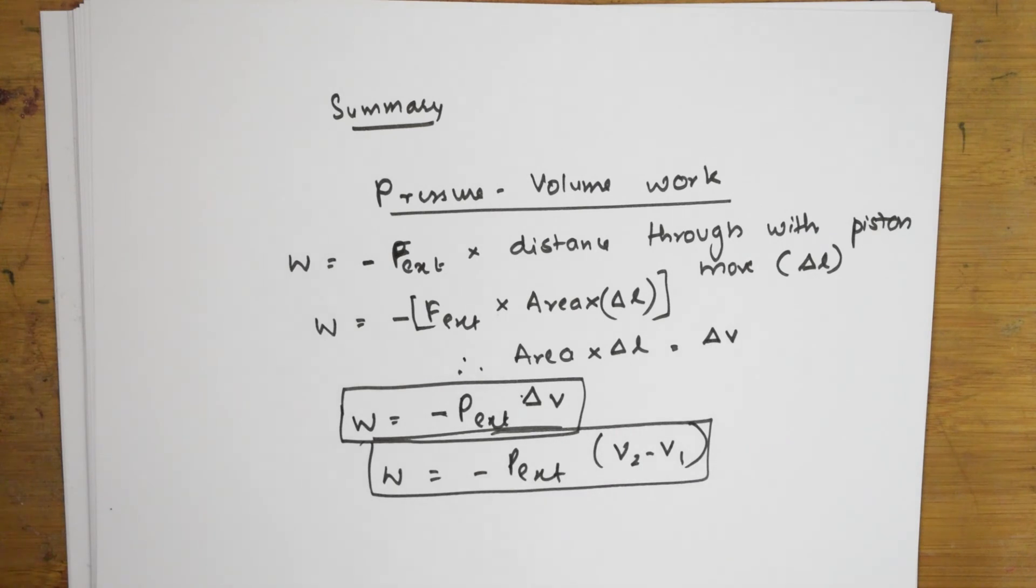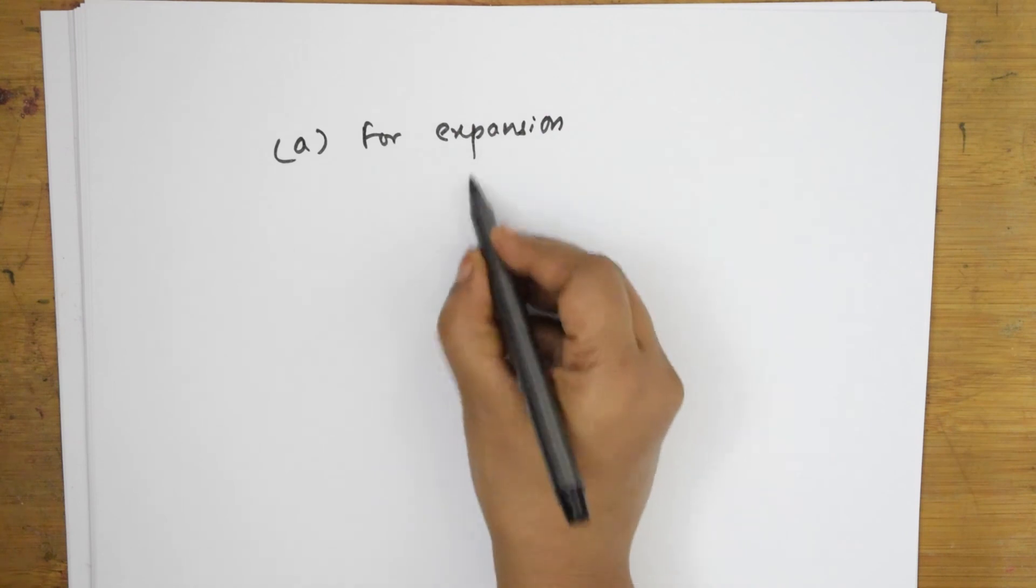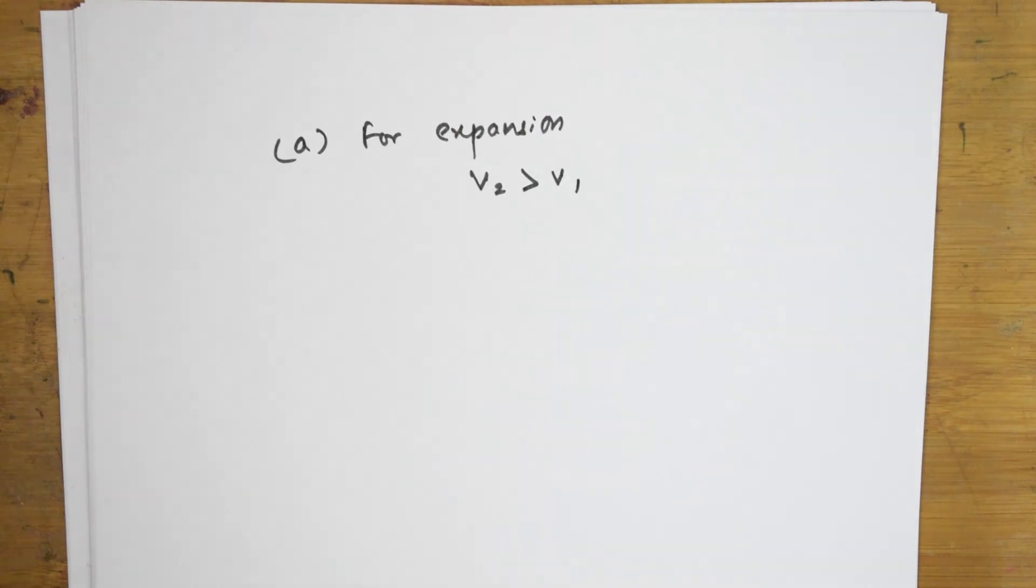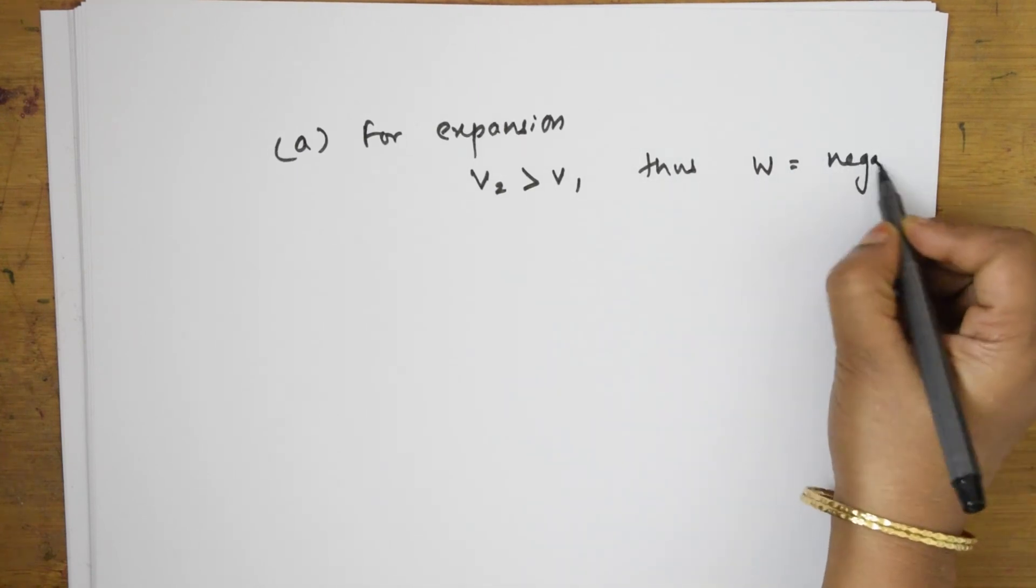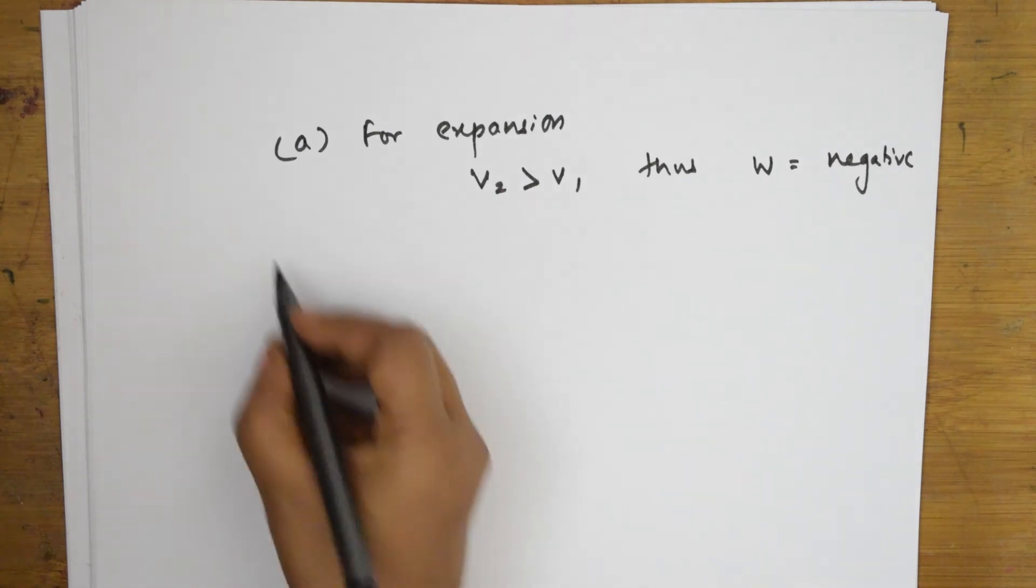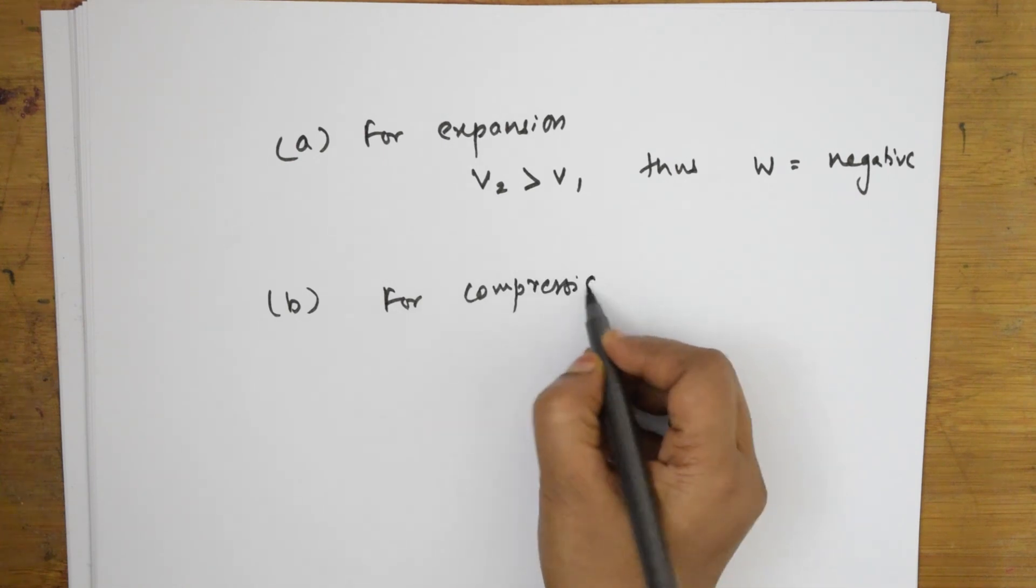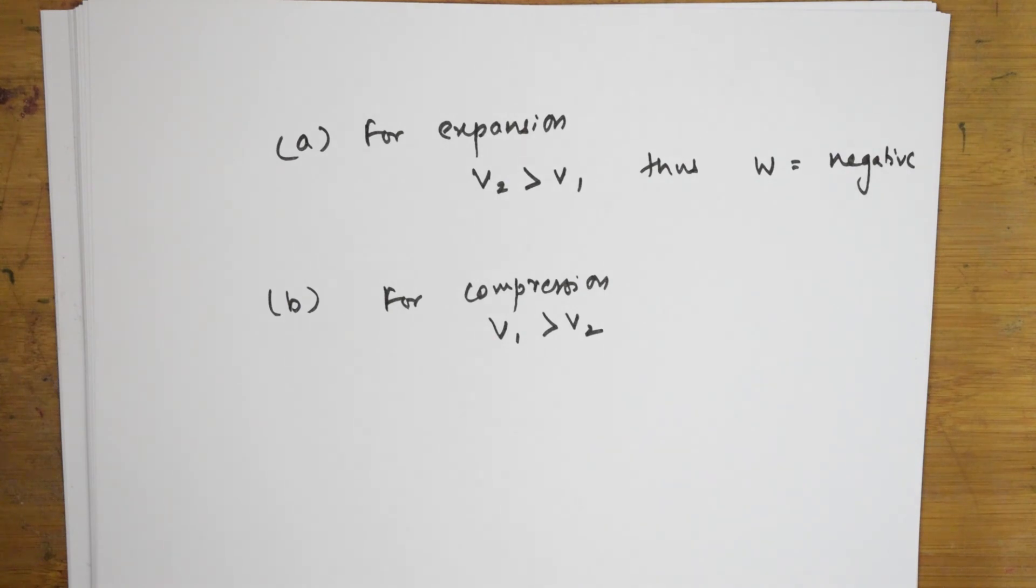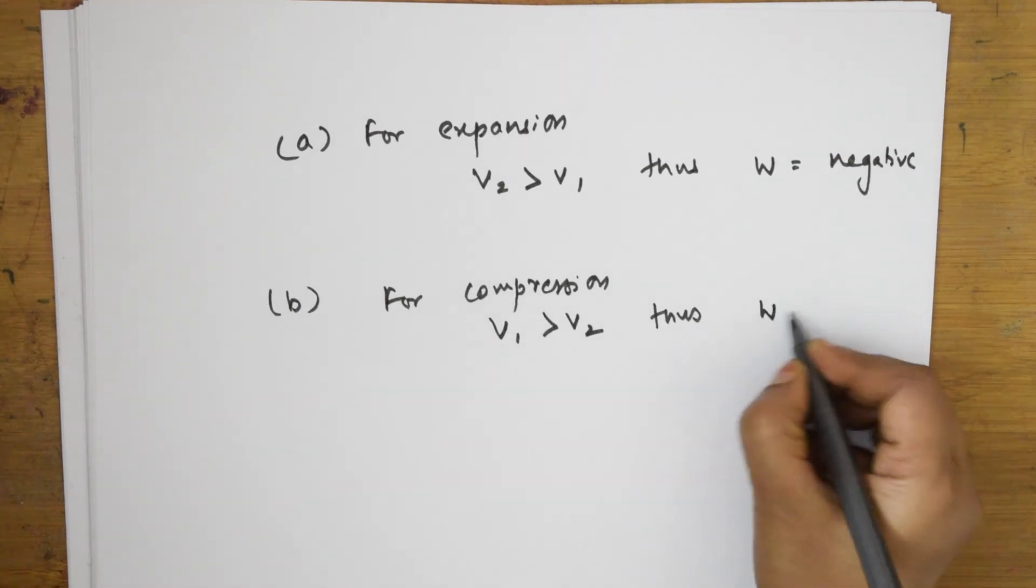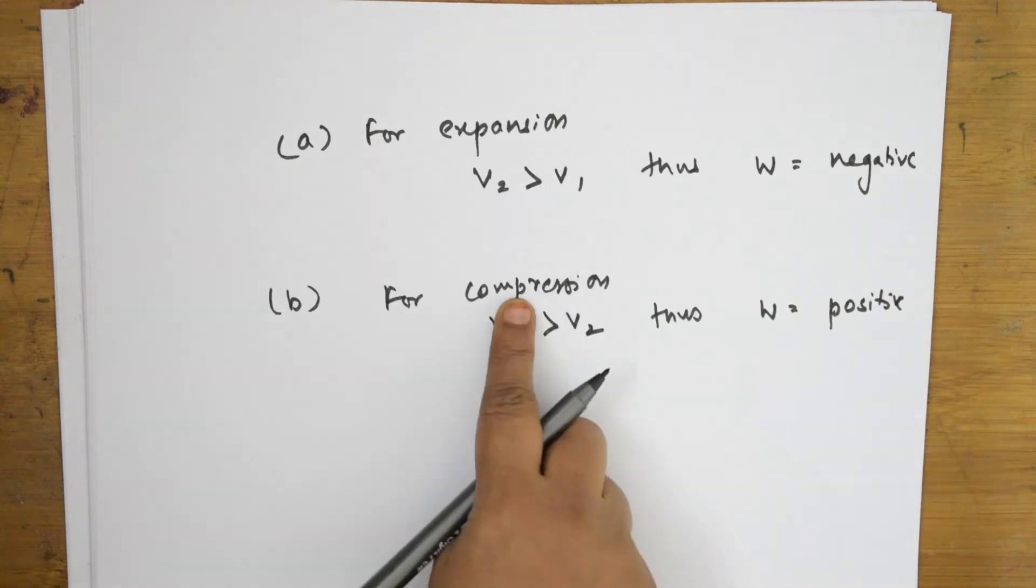Now, what should you remember here? Most important concept is, remember, for expansion, V2 is greater than V1. V2 is greater than V1. What will happen? Expansion terms, W is negative. Remember this. Second important concept, for compression, V1 is greater than V2. W is positive. Remember this. Expansion is negative. Compression is positive.